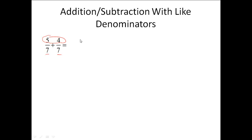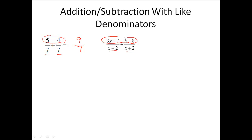In this case, we would take our 5 plus 4 and get a 9, and then our 7 would stay. We do not add the denominators. We do the same type of thing when we have rational expressions. When the denominators are identical already, we just add the tops together. So 3x plus x gives us 4x, and 7 plus negative 8 gives us negative 1. The denominator just stays as x plus 2.